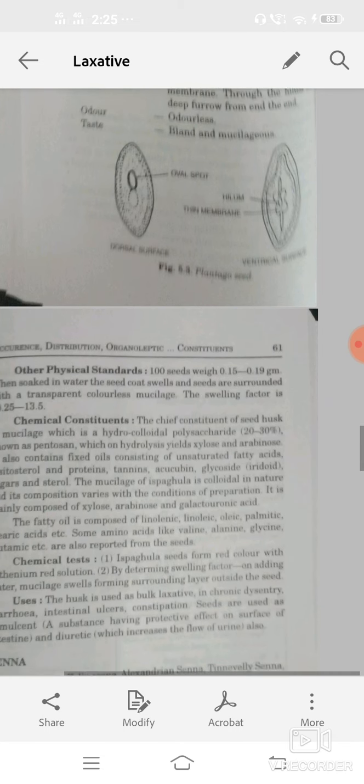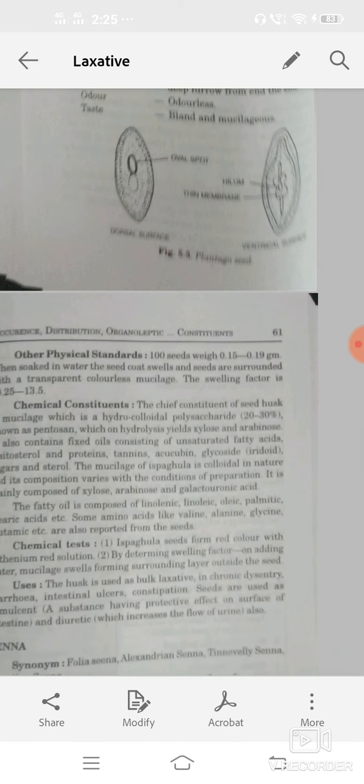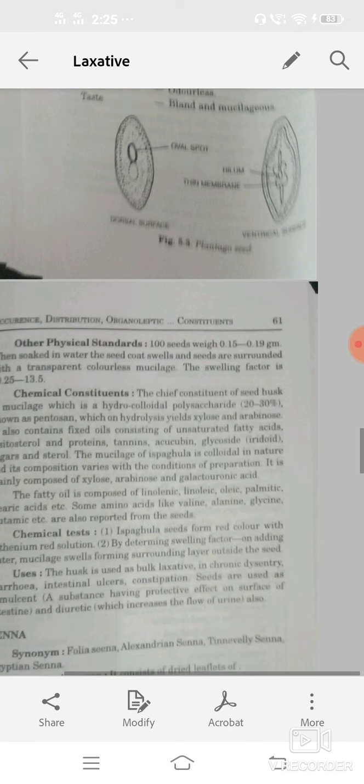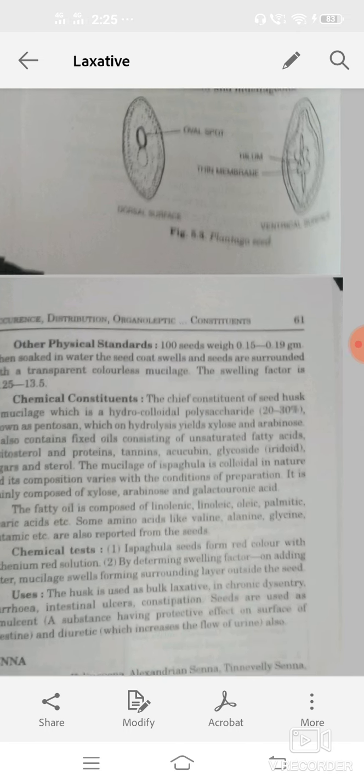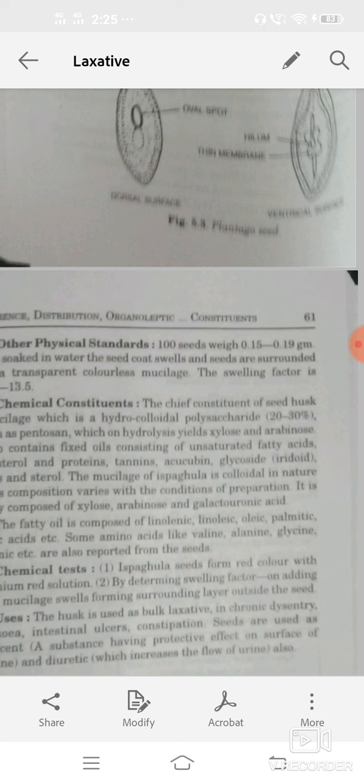Chemical constituents on hydrolysis: xylose, arabinose, and other fixed oil or unsaturated fatty acid like beta-sitosterol, protein, tannin, glycosides, sugar, sterol, aucubin.